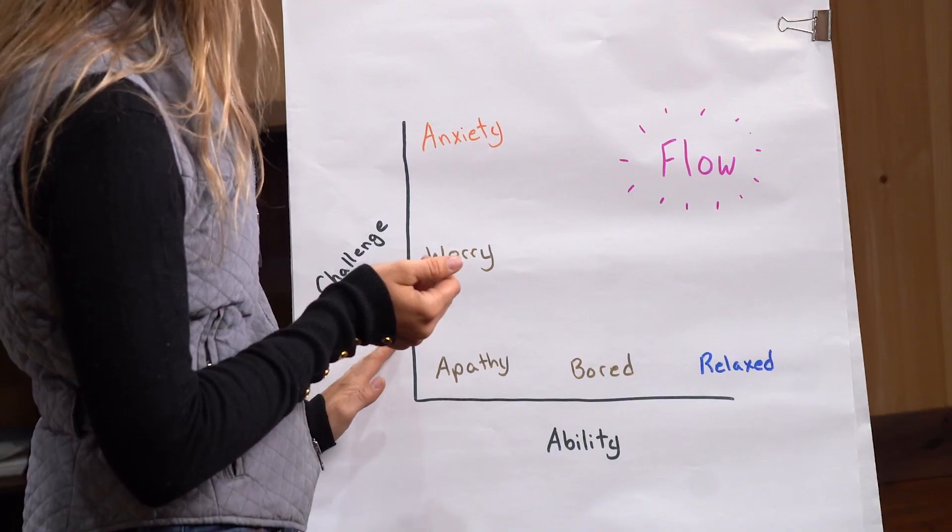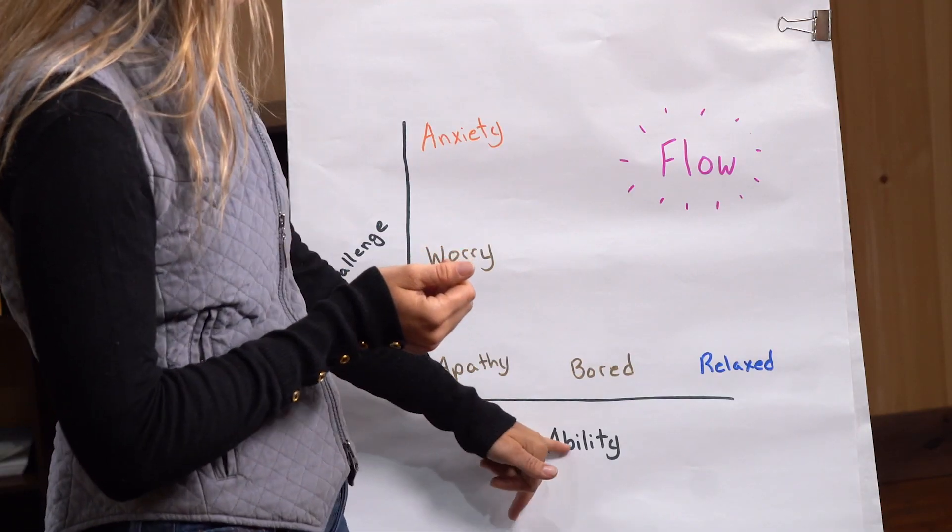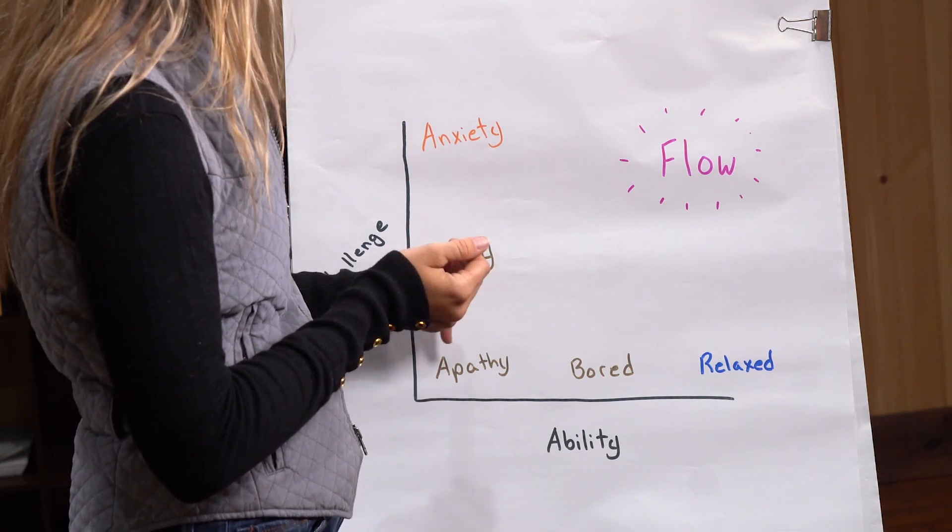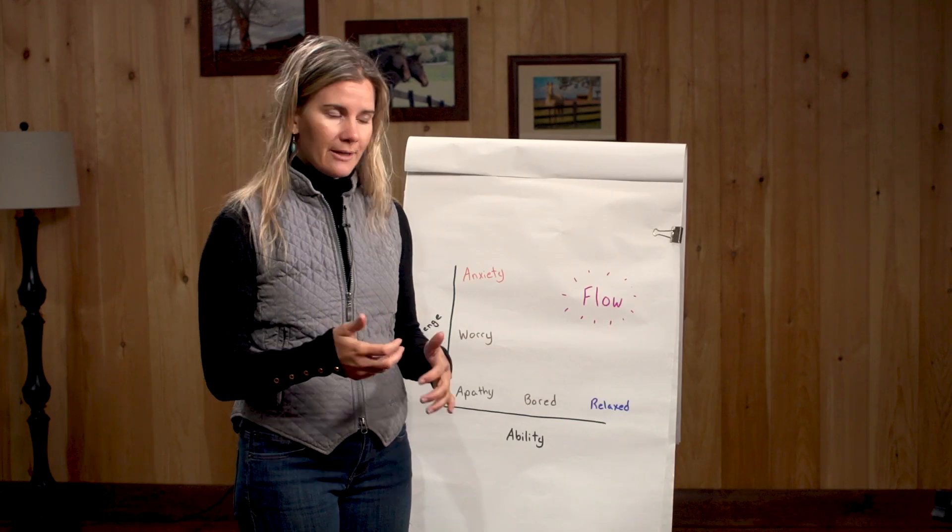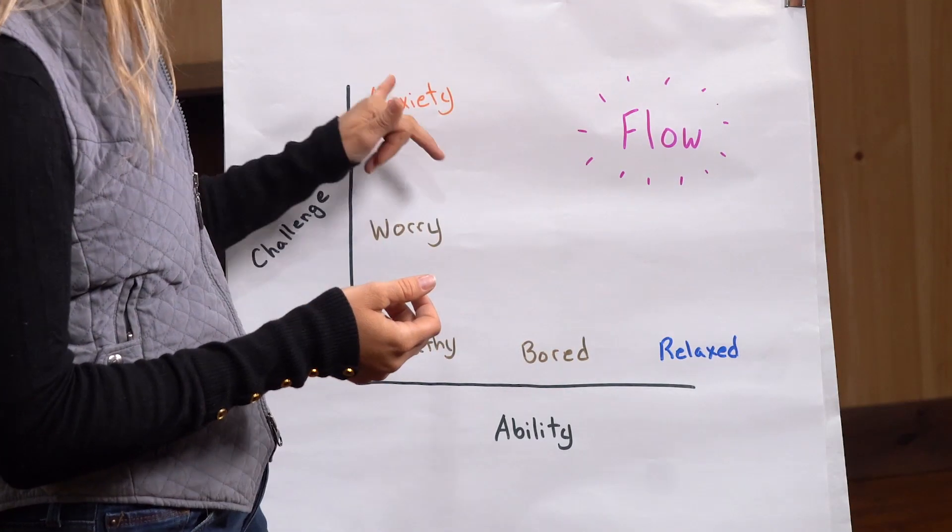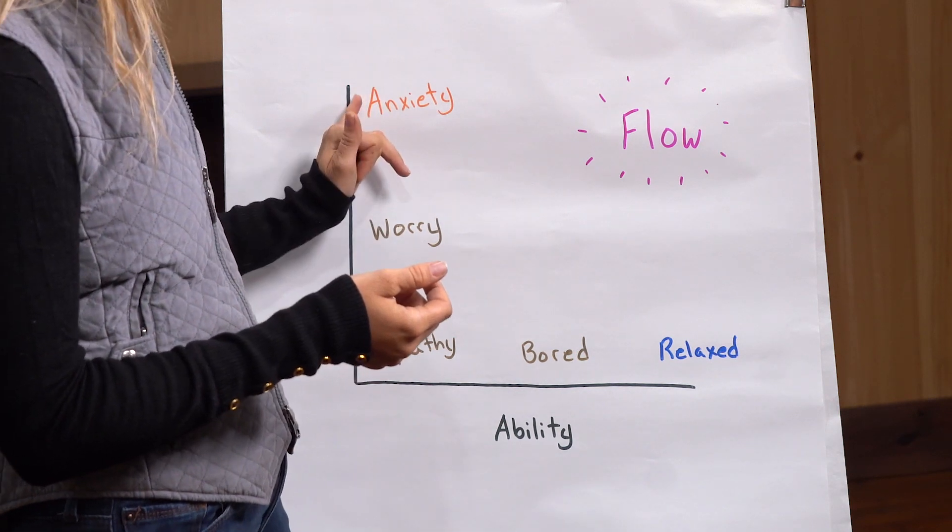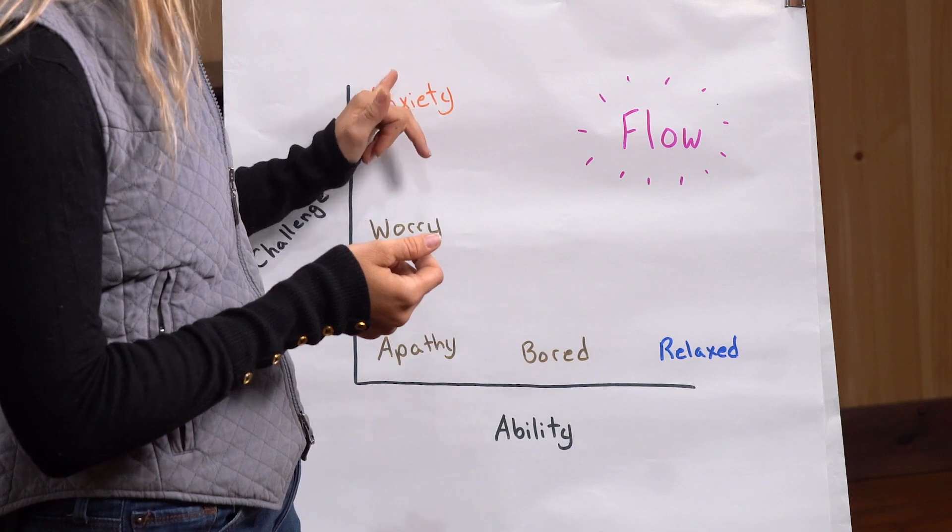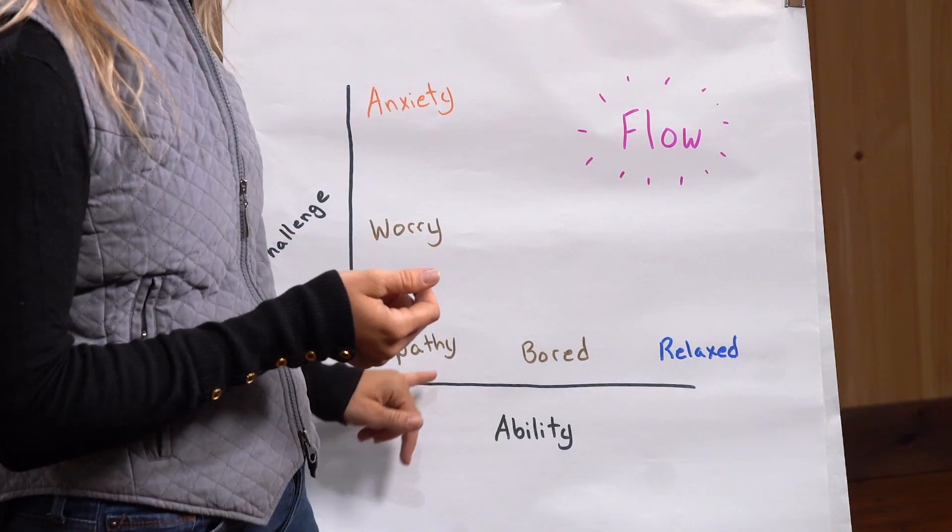And then when we start to go up this level of challenge, but our level of skill and ability is low, first, if it's just a moderate challenge, we start to get worried. If it starts to go higher, then we can get into anxiety. So that's the state of anxiety happens when the challenge, the perceived challenge, is high in comparison to what our ability is.